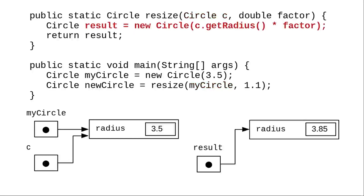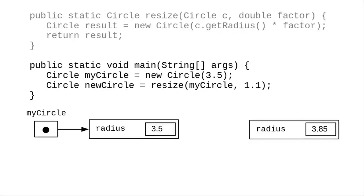But this time, we create a new circle object with the updated radius and return that new object. A reference to that returned object is stored in newCircle, leaving the original myCircle untouched.